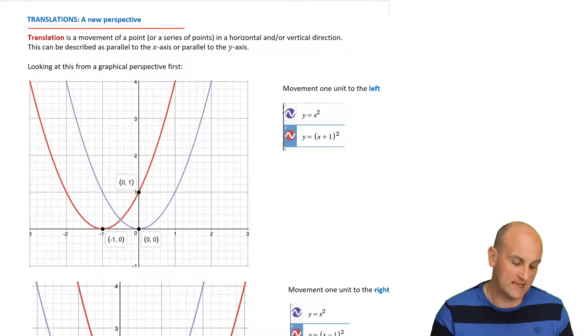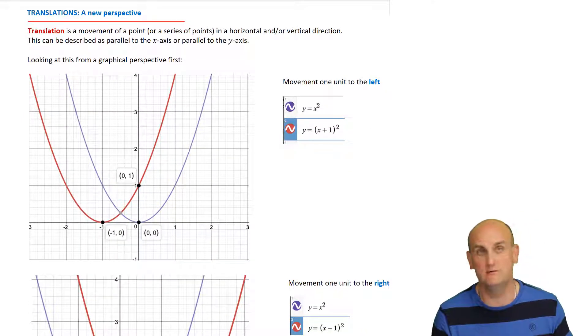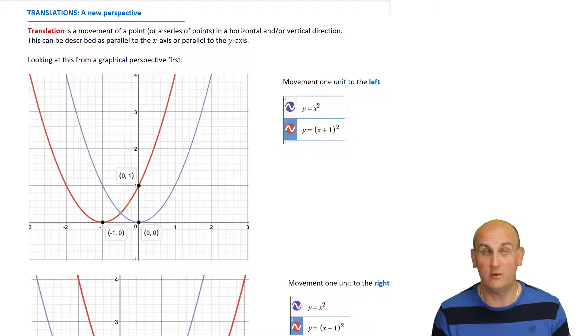So, basically a translation is a movement of a point or a series of points in a horizontal or vertical direction. Now, language here is really, really important. But when I do the questions, I'll pick that up in a second. So, first things we're going to do is we say that when we move things, we describe that as moving parallel to the x-axis or parallel to the y-axis. And again, there's very specific terminology that we need to use.